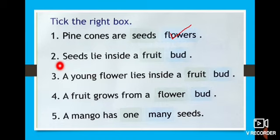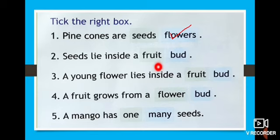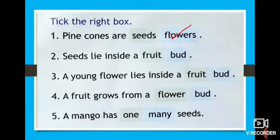And look at the second one. Seeds lie inside a fruit — F-R-U-I-T — or a bud — B-U-D. Where does the seed lie? It is inside the fruit. Very good. It is inside the fruit. Give a tick in it.